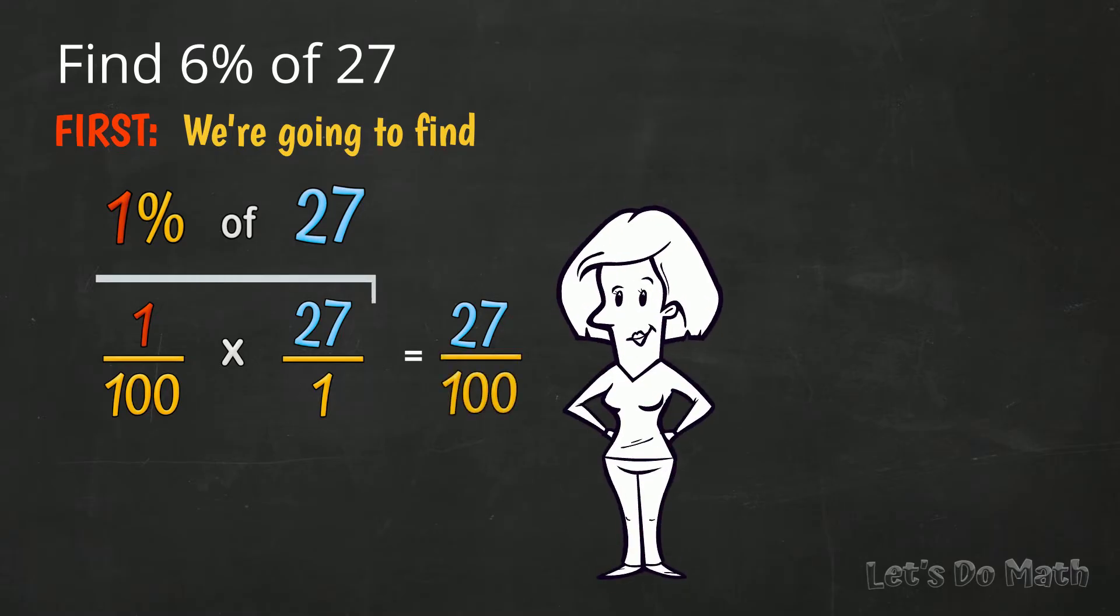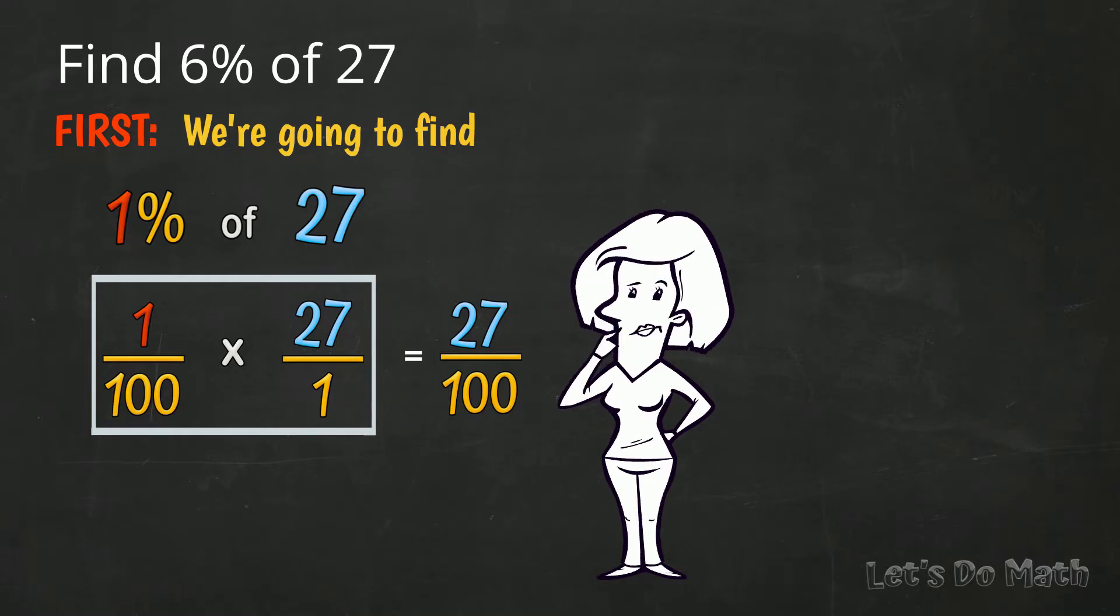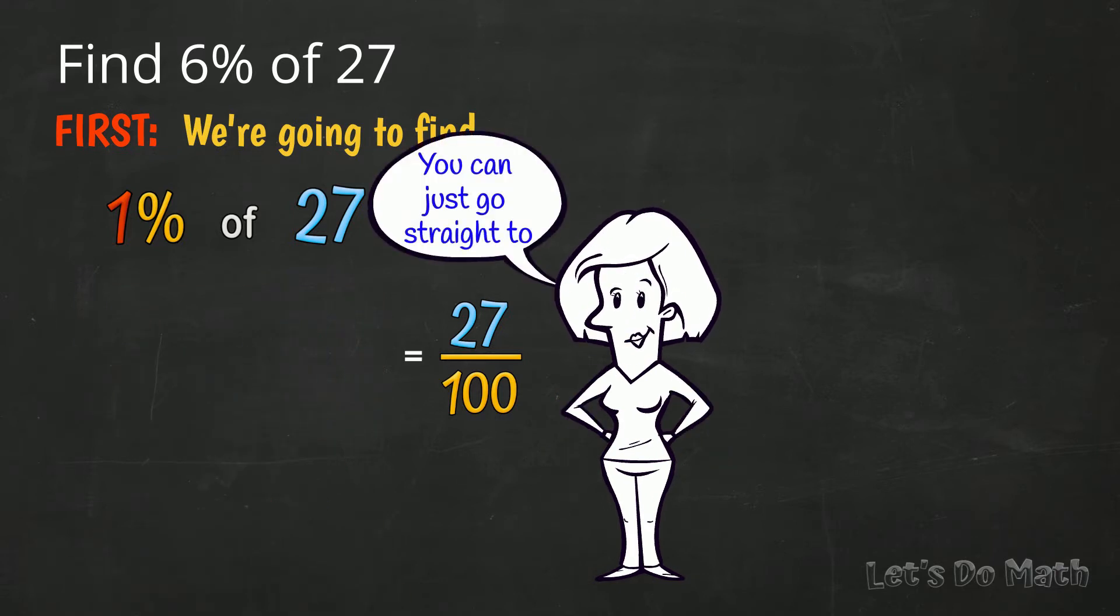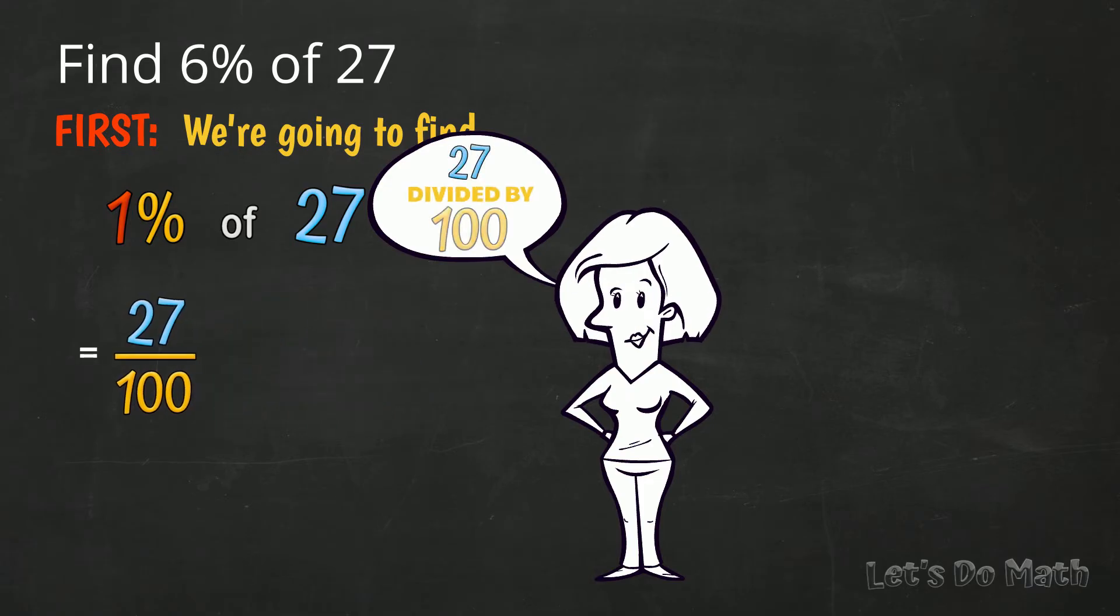I showed you this working to prove this end part to you. When you find 1% of 27 though, you don't need to bother doing all this working out on paper. You can just go straight to 27 divided by 100.